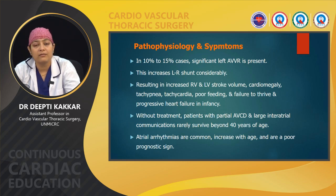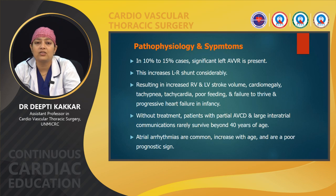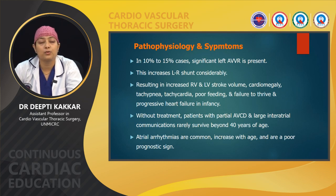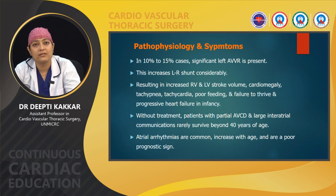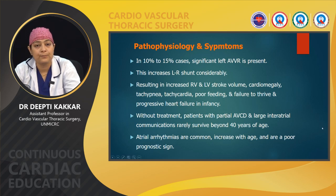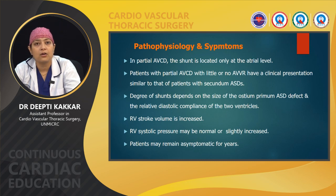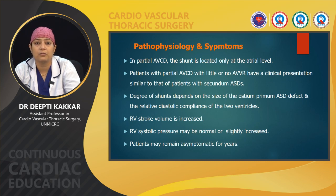Without treatment, patients with partial AVCD and large interatrial communications rarely survive beyond 40 years of age. Atrial arrhythmias are very common, increase with age, and are a poor prognostic sign with high risk for post-op complications. In partial AVCD, the shunt is located only at the atrial level; patients with little or no AV valve regurgitation have clinical presentation similar to ostium secundum ASD. The degree of shunt across the ASD depends on the relative diastolic compliance of the two ventricles. RV stroke volume is increased and RV systolic pressure may be normal or slightly increased; some patients may remain asymptomatic for years.